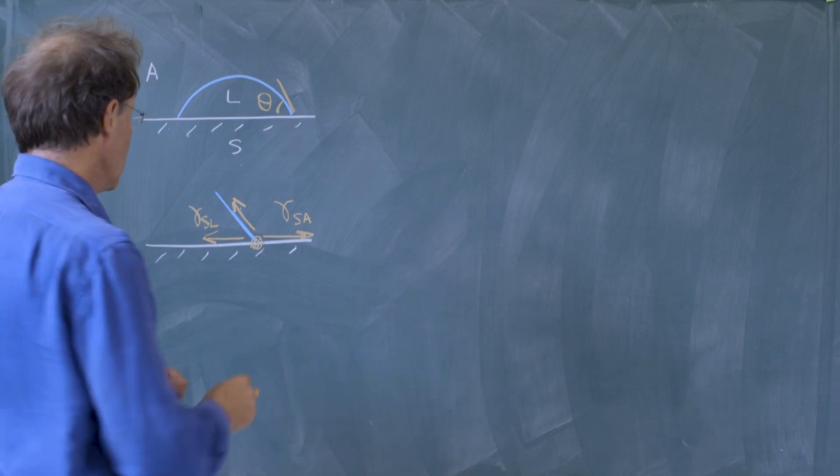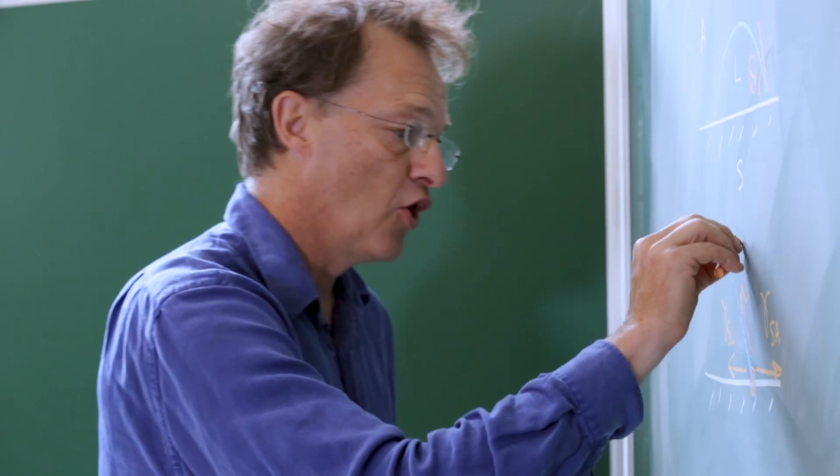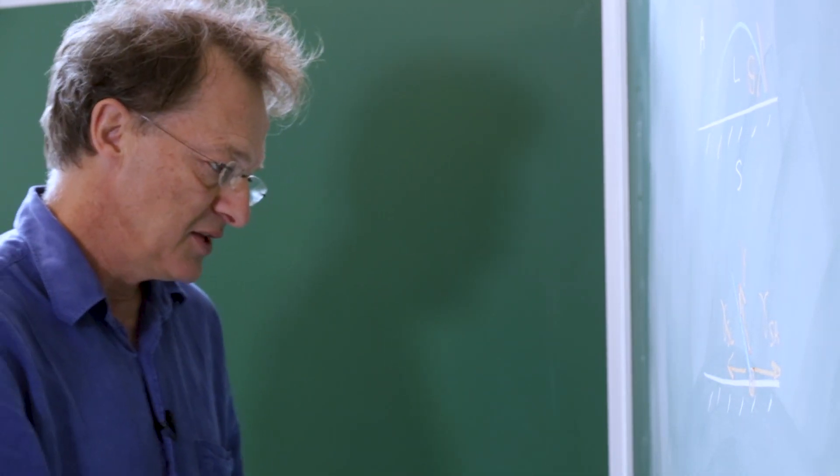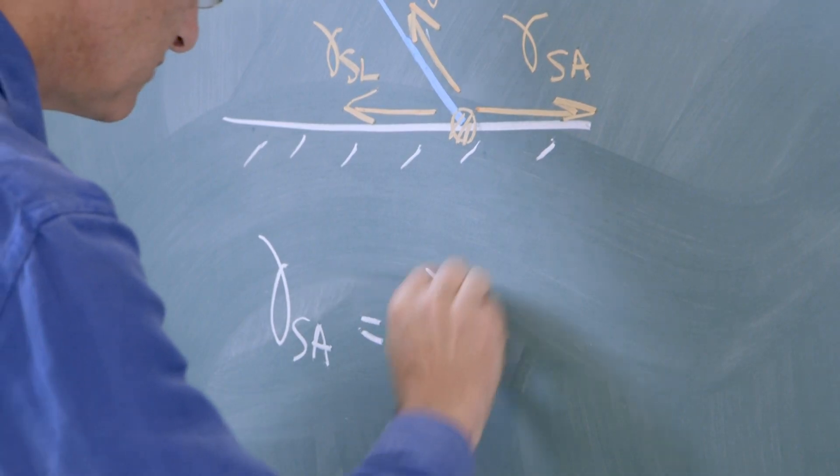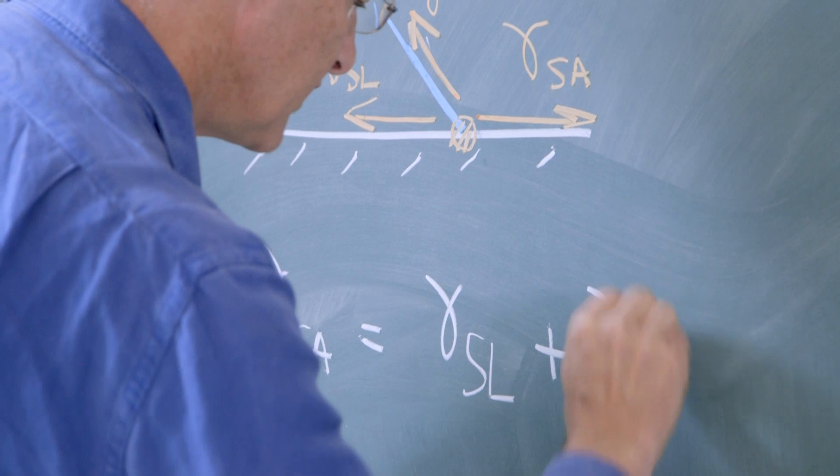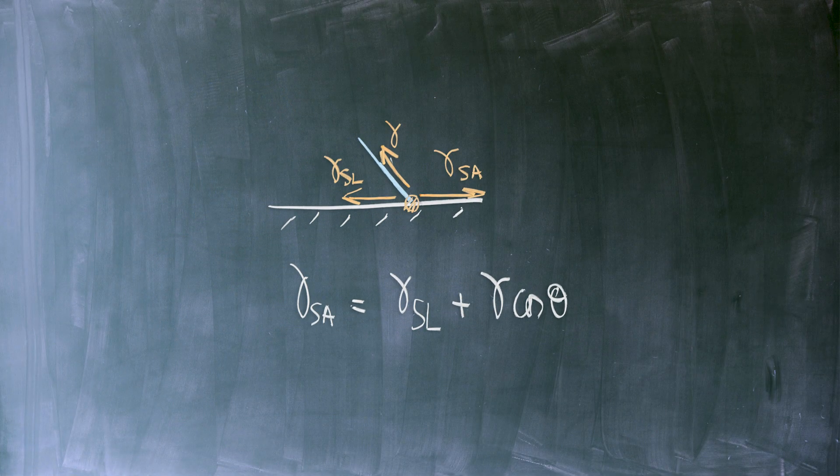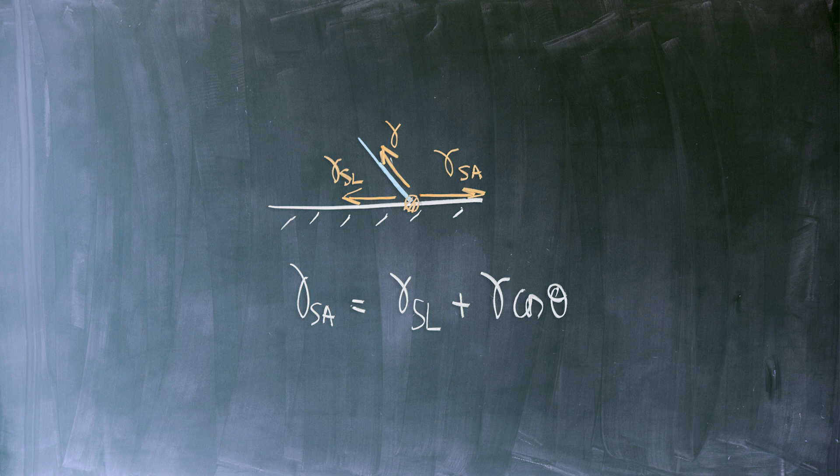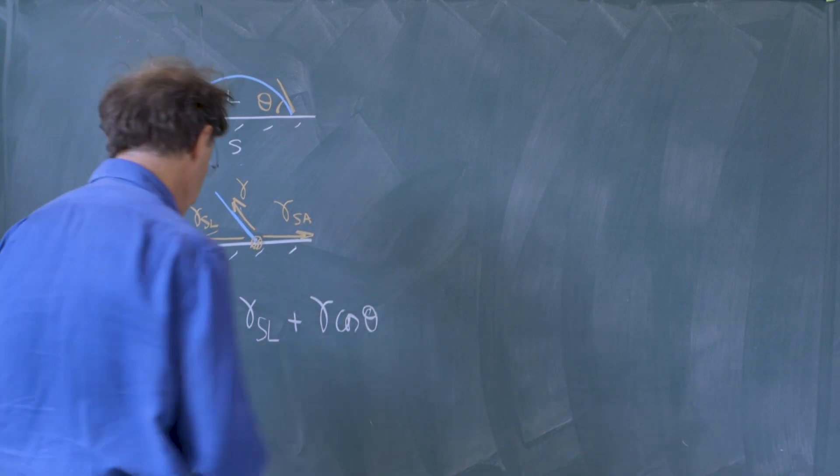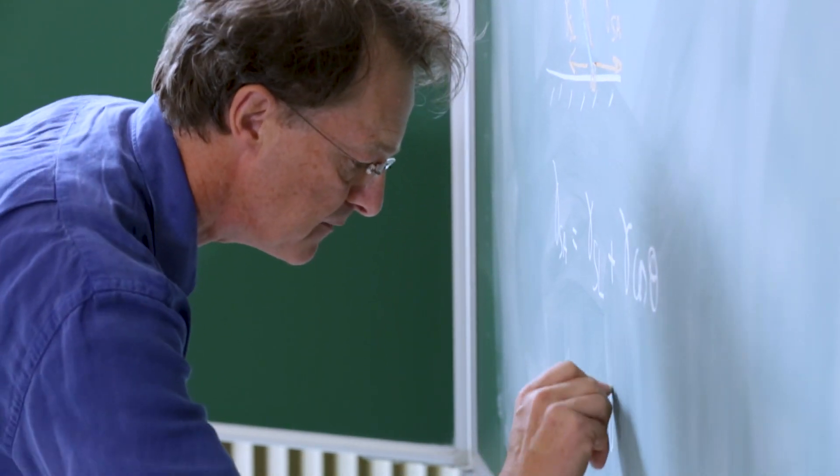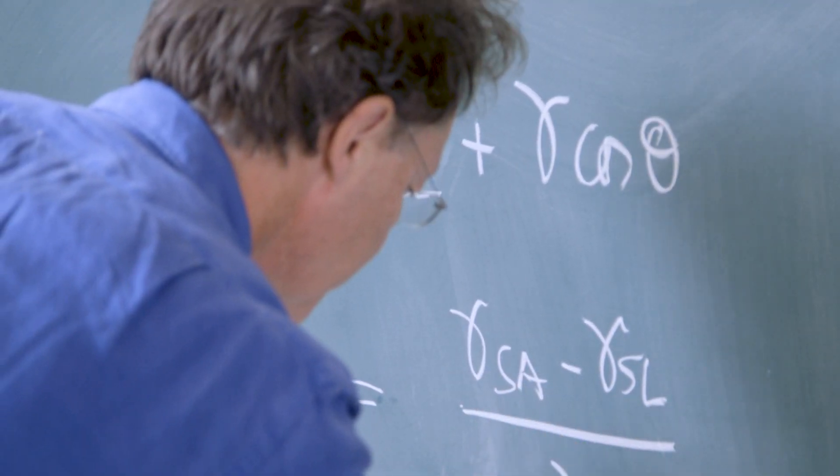At equilibrium, all these forces must balance, and if we project them on the horizontal, we get a very simple relationship: gamma SA must be balanced by the sum of gamma SL and gamma cosine theta. From that, we immediately deduce, as Thomas Young did in 1805, that cosine theta equals gamma SA minus gamma SL over gamma.